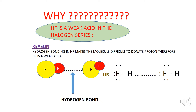In the diagram, the hydrogen is embedded between two fluoride atoms. Therefore, it becomes difficult for the hydrogen to move away and donate a proton.